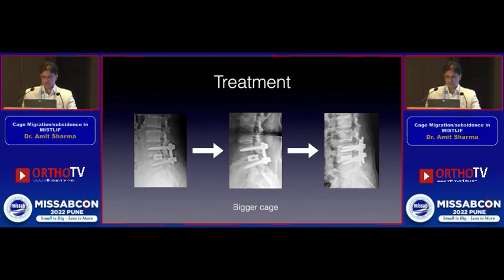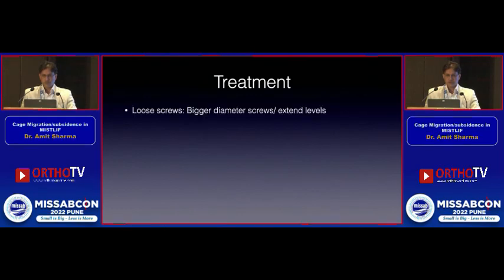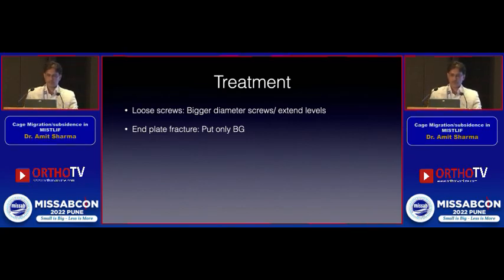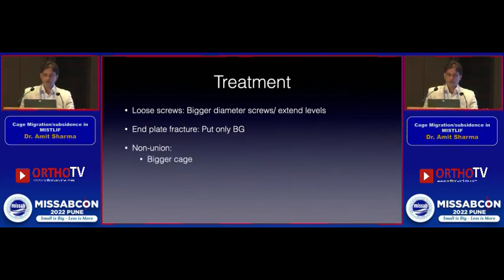If screws are also loose along with the backed-out cage, use a larger diameter screw. Otherwise, extend fusion levels. If there are endplate fractures, it's better not to re-place the cage — instead, put bone graft, or use an iliac crest graft piece inserted as a cage substitute.